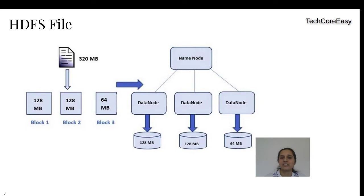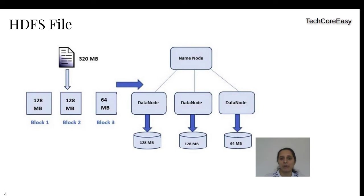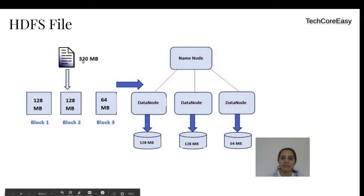Let's recap what an HDFS file is. It is similar to our local file but stored in the Hadoop Distributed File System. HDFS stores files in a distributed, divided format — it divides the given input file into blocks. By default the block size is 128 MB, but this can be configured. For example, a 320 MB input file is divided into three blocks: two of 128 MB and one of 64 MB.